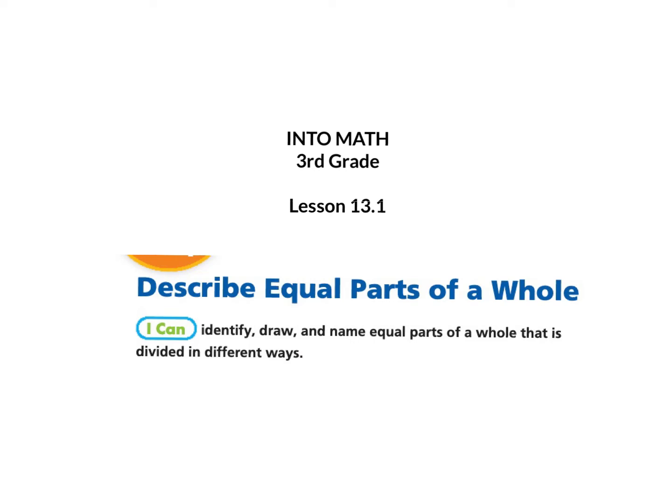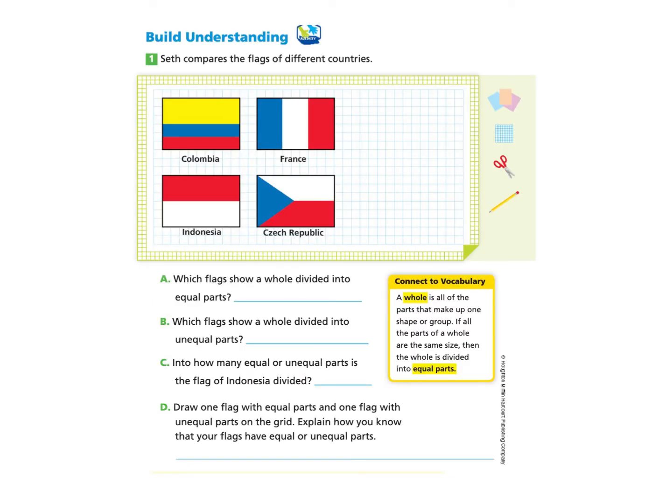This is Into Math 3rd Grade Lesson 13.1: Describe equal parts of a whole. I can identify, draw, and name equal parts of a whole that is divided in different ways. Please gather your workbook and a pencil and turn to page 354. You can always pause anytime as needed, and we will start under Build Understanding Question 1.